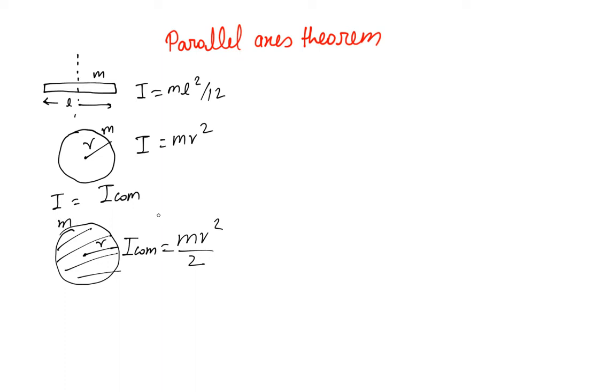So according to parallel axis theorem, if you have an object and you know the center of mass and I_com - the center of mass moment of inertia about the axis which is passing through center of mass - let's say you already know this.